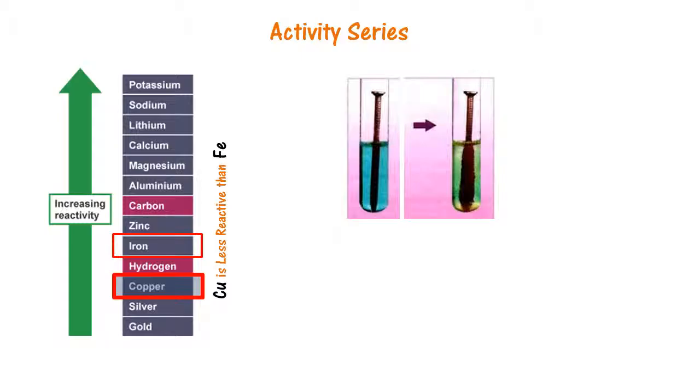This is what happens. Copper gets deposited on the iron nail and ferrous sulfate solution is produced. Iron displaces copper from copper sulfate solution. Notice that iron is more active than copper, and therefore iron is able to displace copper in the copper sulfate solution.